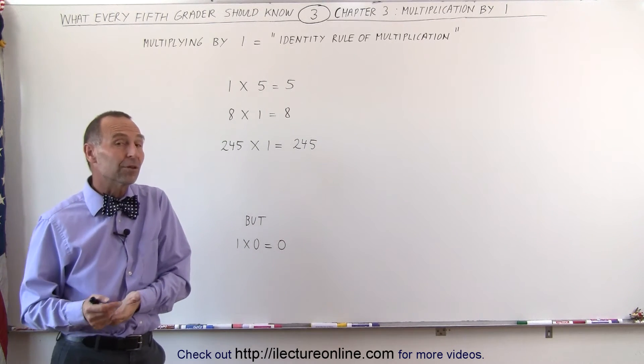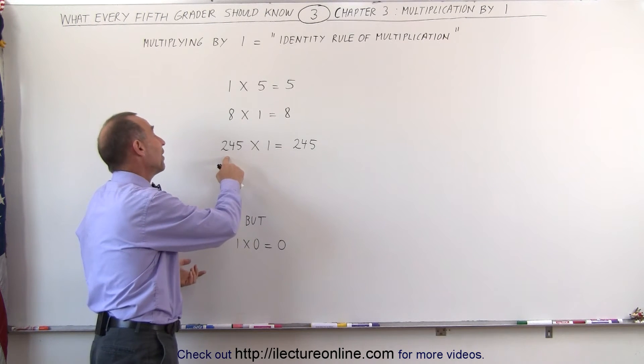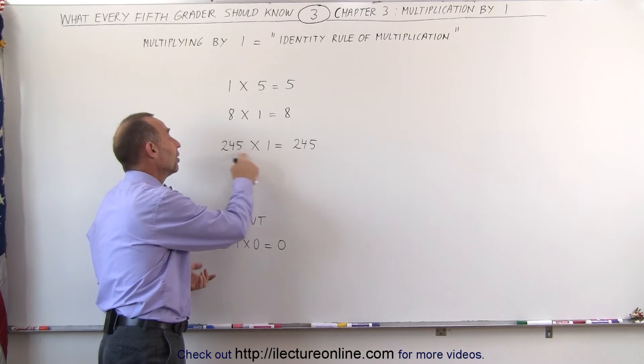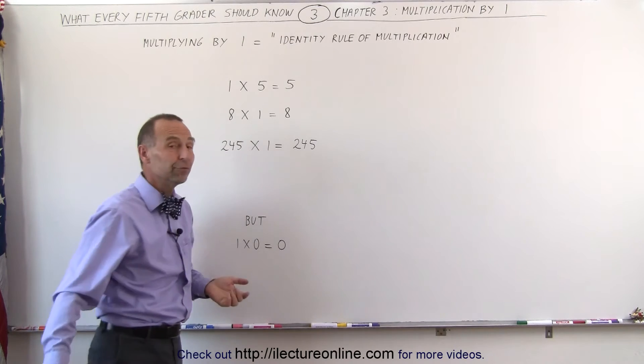No matter how big the number is. If the number is as big as 245, 245 times 1, you simply get the number back of 245.